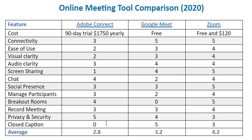Finally, in terms of closed captioning and accessibility, Adobe Connect does not provide closed captioning. Google Meet automatically provides closed captioning and it's pretty good. Zoom provides closed captioning, but you have to get a secondary tool to turn that on. In terms of overall average, I rated Zoom the highest, Google Meet somewhere in the middle, and Adobe Connect the lowest. I welcome your comments, suggestions, and challenges in the comment area.